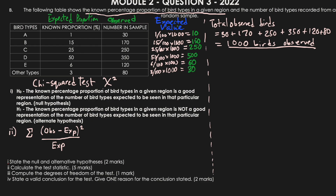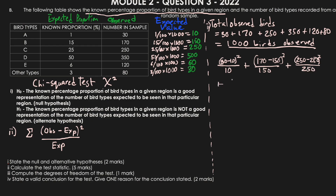Now we apply the chi-square formula using our observed and expected values: (30−10)² / 10, plus (170−150)² / 150, plus (250−250)² / 250, plus (350−500)² / 500, plus (120−60)² / 60, plus (80−30)² / 30. We sum all these terms to calculate the test statistic.